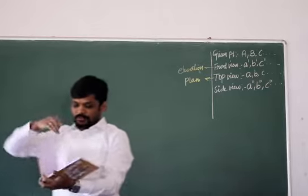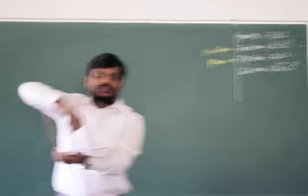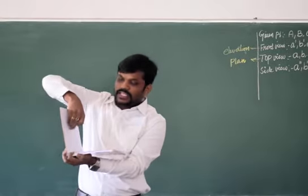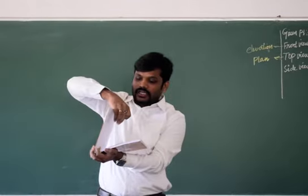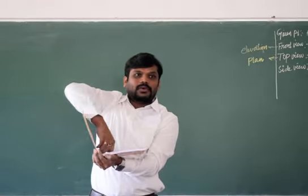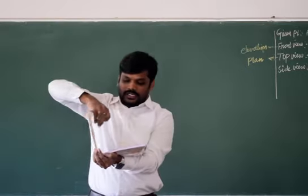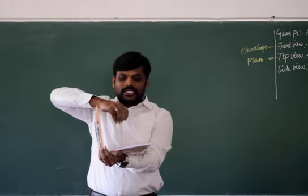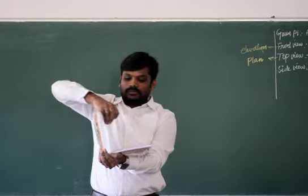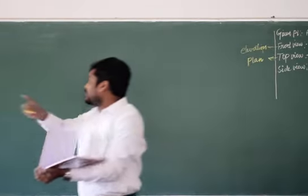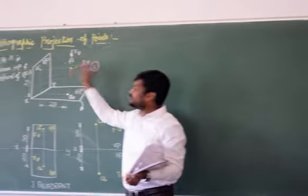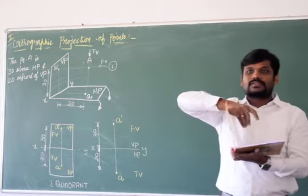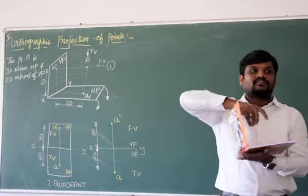Now, the point A, this is a capital letter, uppercase letter. The point A is 30 above HP and 20 in front of VP. 30 above HP is here and 20 in front of VP, that means here. The point is located at point A is at a distance of 30, 20. That is what I have written here, capital A. This point, views now. What are the views? The question is asked, draw the projections of point A.